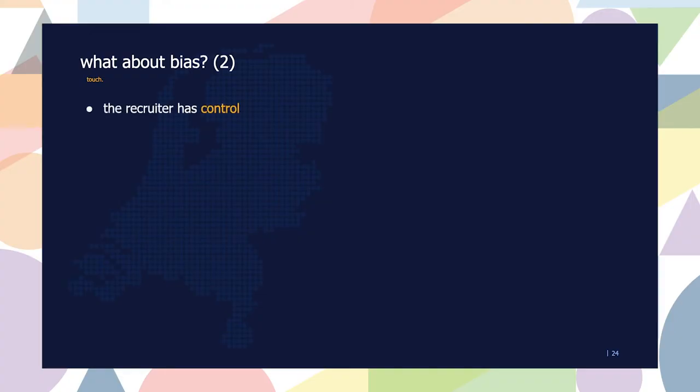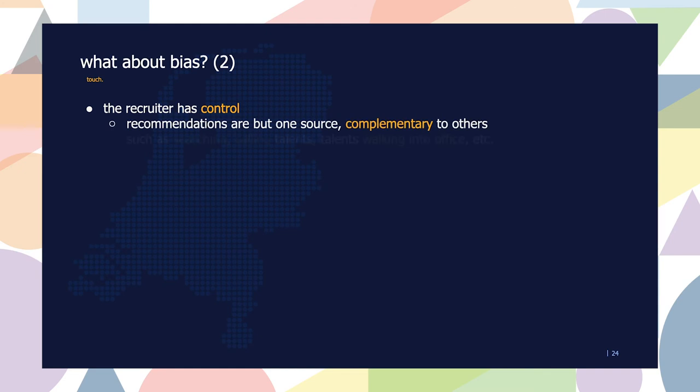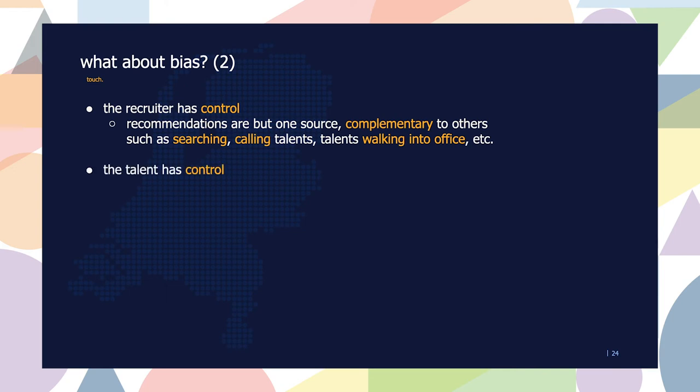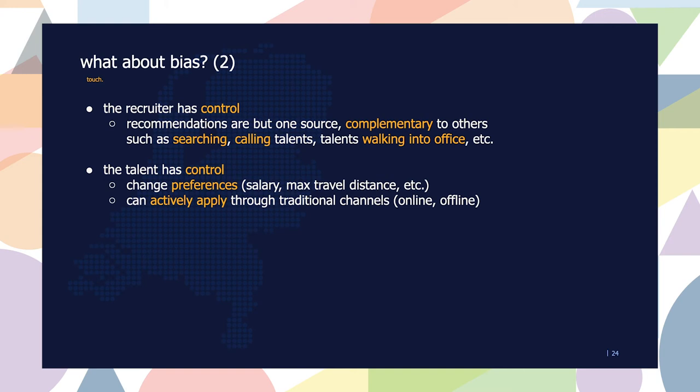The other part is the human touch aspect. In our case the recruiter has control in this scenario — the recommendations we generate are but one source, complementary to many others. The recruiter can always pick up the phone, call a talent, talents can walk into the office, or the recruiter can use a search engine. Technology is just part of a bigger toolset. The talent likewise has control — they can change their preferences such as minimum salary or maximum travel distance, which changes how they are recommended in the system. Talents can also still actively apply through other ways: walking into offices, calling, or going online. It's important to stress that the technology is just one part of a bigger ecosystem.